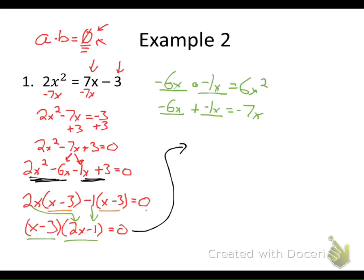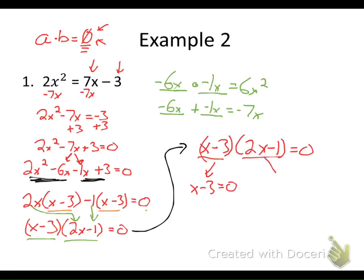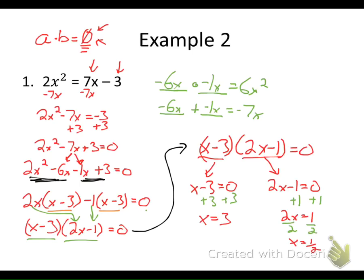We've got x minus 3 times 2x minus 1 equals zero. Using the zero product property, either that first number is zero or that second number is zero. I add 3 to each side to get x equals 3, and for the second factor I have 2x equals 1, so I divide by 2 to get x equals one-half. This equation also has two solutions: the solution set is {3, 1/2} — the two values of x that make the equation true.